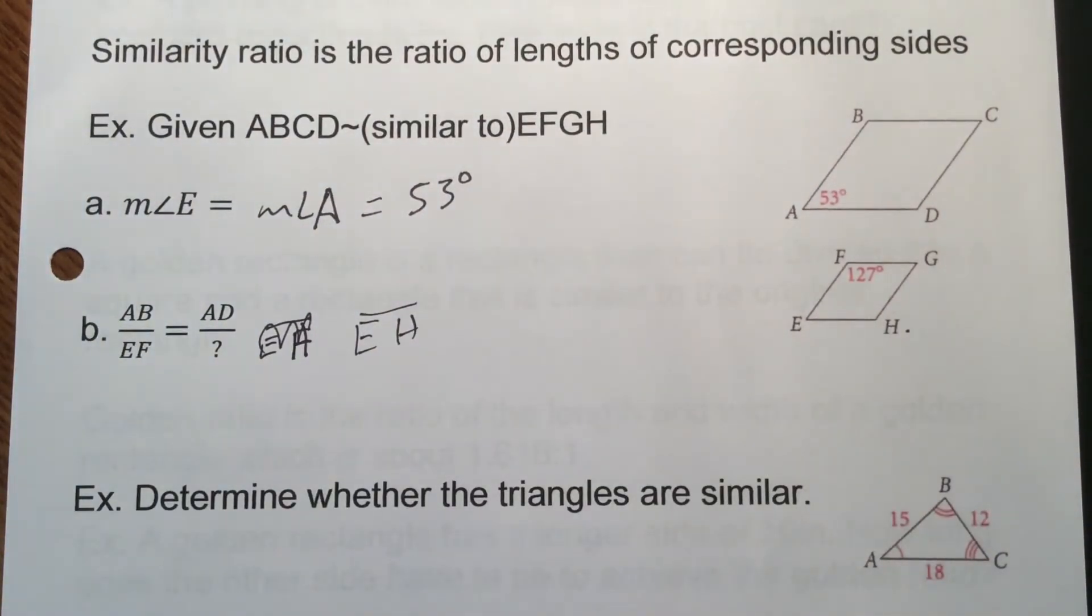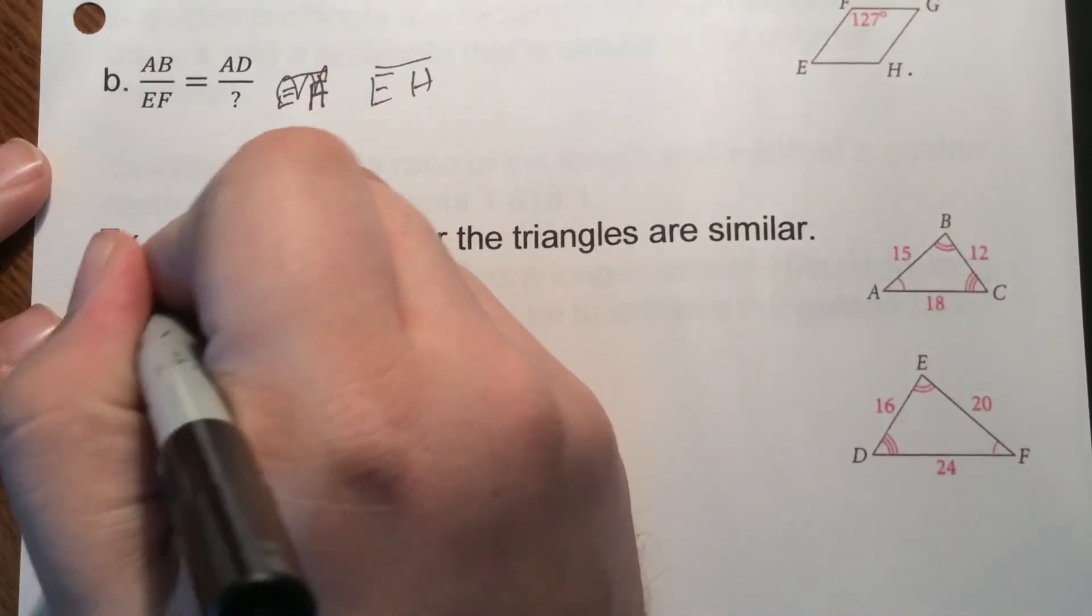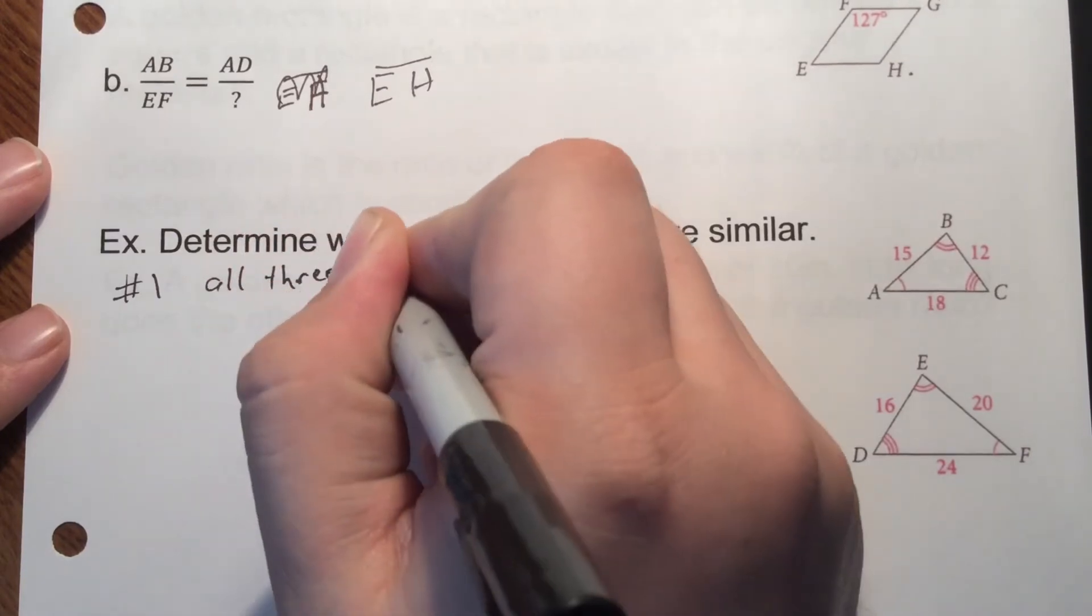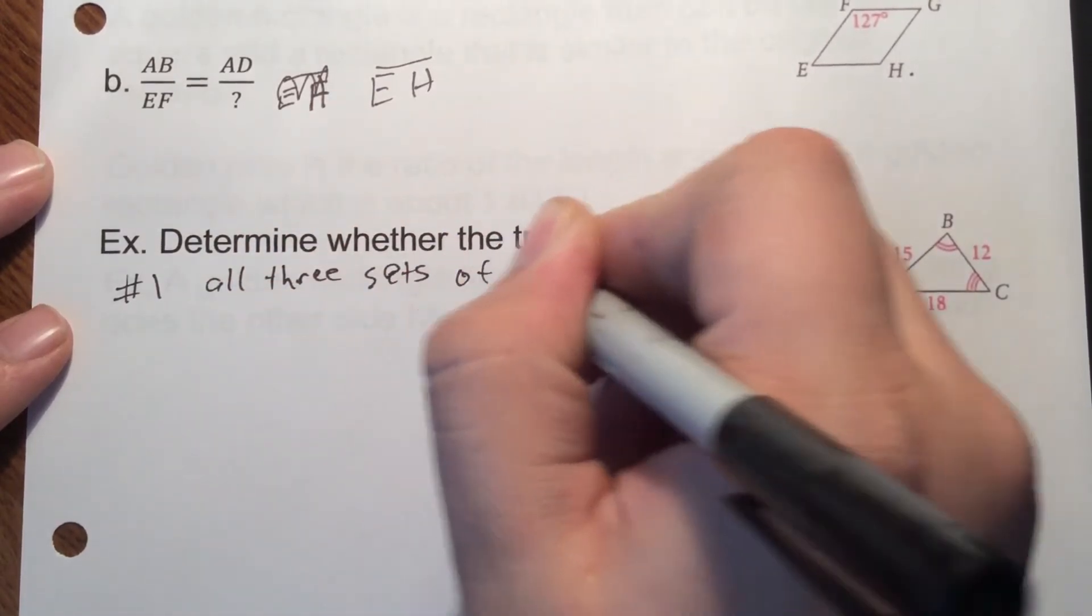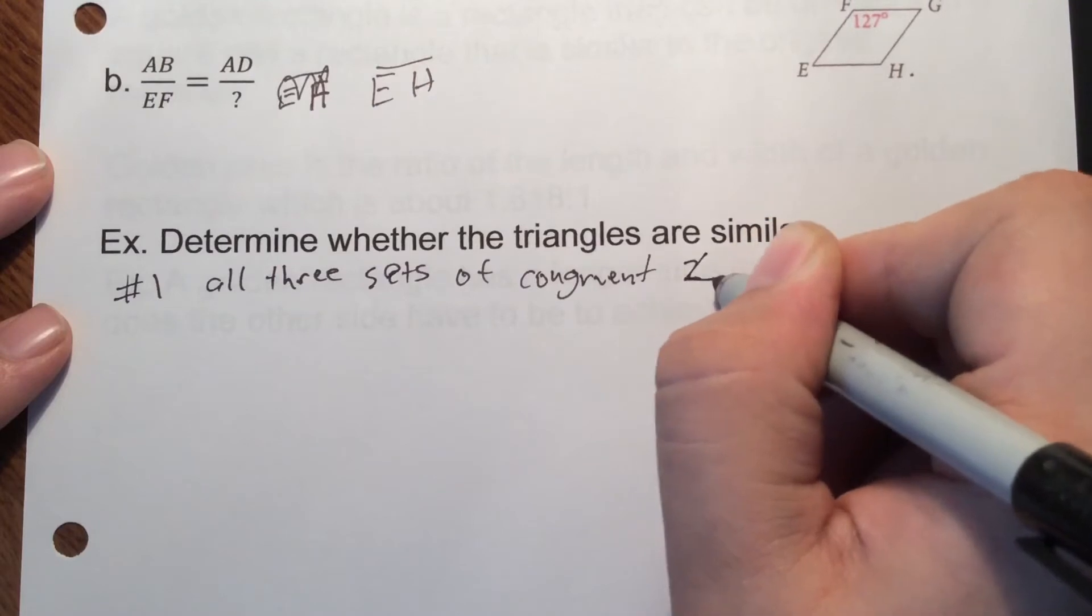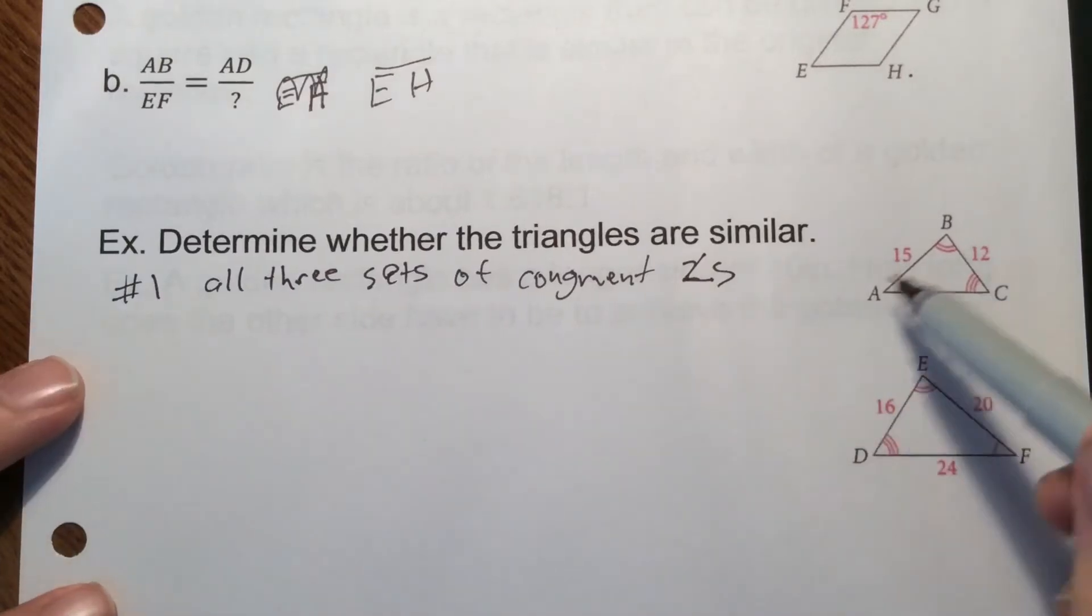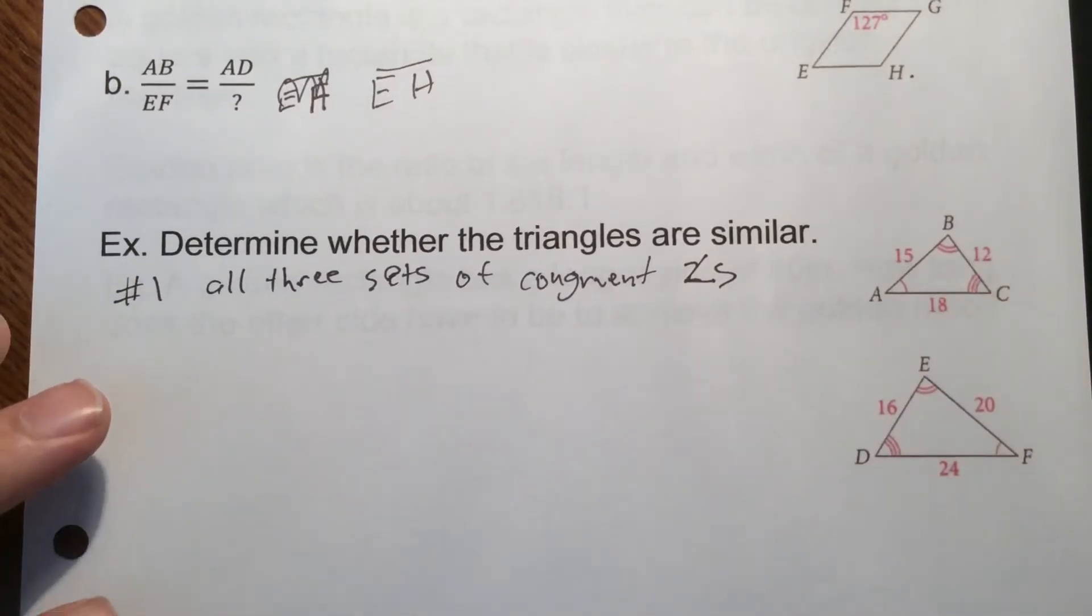So now to determine whether these are proportional, we have to look at a few different things. Well, first off, we're looking at angles. We have a set of angles that are congruent. We have a second set of angles that are congruent, and we have a third set of angles that are congruent. So for the number one part, all three sets of congruent angles. So that's something you always need to check. Always look for those, are these three sets of angles congruent? The next part is you need to look at the sides and see if do we have the same similarity ratio.